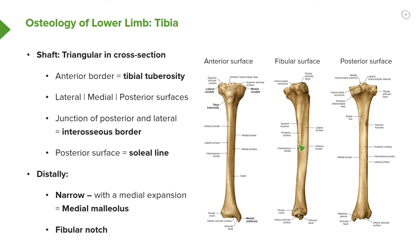On the posterior surface we have the nutrient foramen for the nutrient artery to pass into the tibia. We can also see on this posterior surface the soleal line, which is important as it's a site of origin for the soleus muscle. Running along the shaft we also have the line for the interosseous border, which is where the interosseous membrane connects the fibula to the tibia.